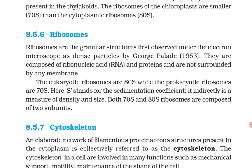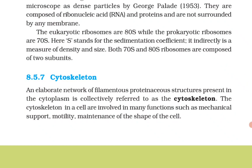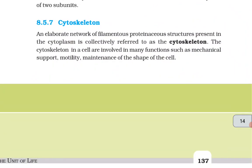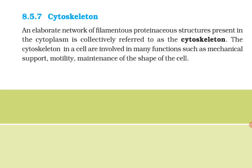Ribosomes: ribosomes are granular structures first observed under the electron microscope as dense particles by George Palade in 1953. They are composed of ribonucleic acid and proteins and are not surrounded by any membrane. The eukaryotic ribosomes are 80S while prokaryotic ribosomes are 70S. Here 'S' stands for sedimentation coefficient, an indirect measure of density and size. Both 70S and 80S ribosomes are composed of two subunits.